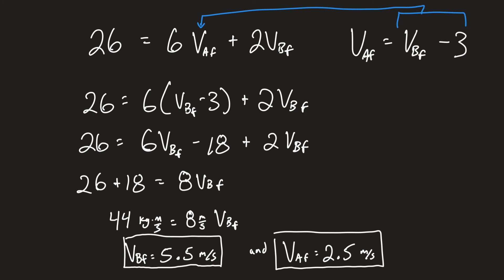Plugging v_B_final minus 3 in for v_A_final and doing all the algebra, then putting the units back in, we get v_B_final = 5.5 meters per second and v_A_final = 2.5 meters per second. Now reflect on these results and see if the relative velocity magnitude stayed the same while the direction flipped. Pause and verify that before we conclude.